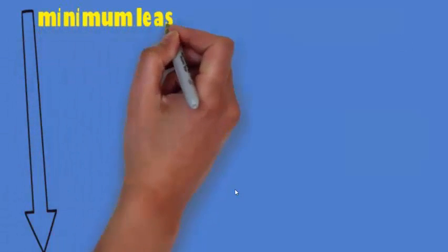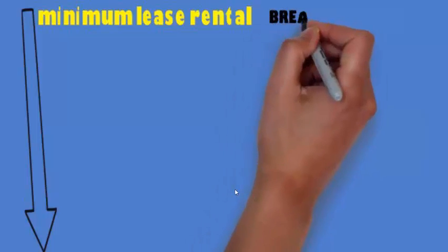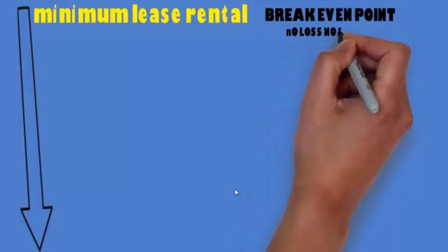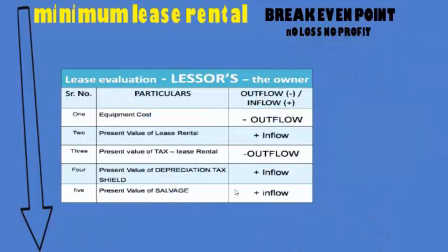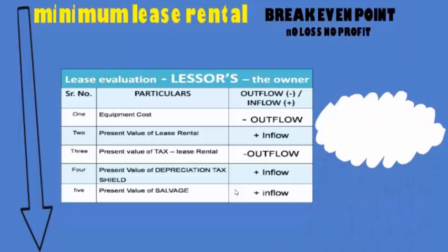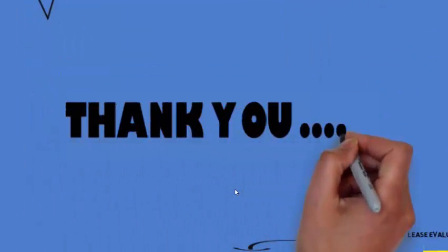Now if someone asks the lessor: what is the minimum rate you should charge to be at a break-even — that is, no profit no loss situation? While calculating the NPV using these five factors, he will set NPV equal to zero and then find the lease rental he should charge. This was all about the factors the lessor needs to consider.